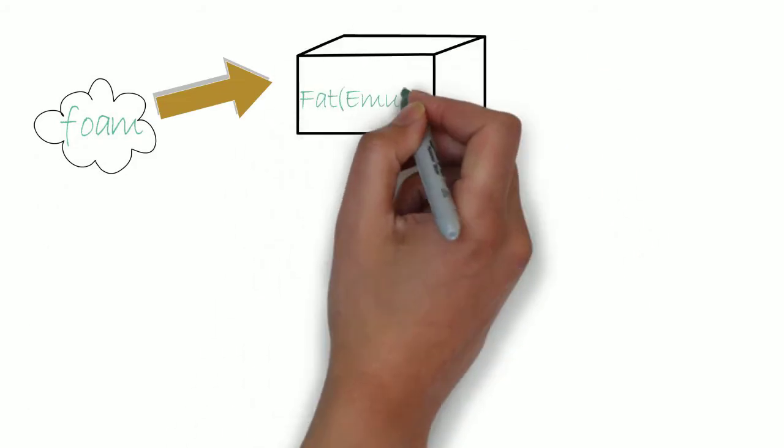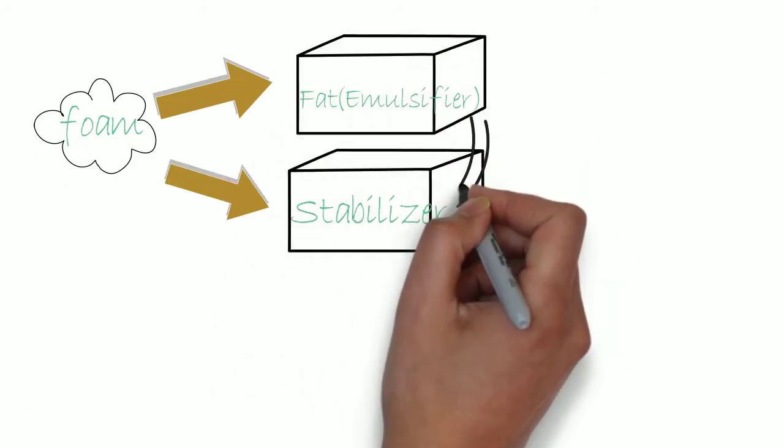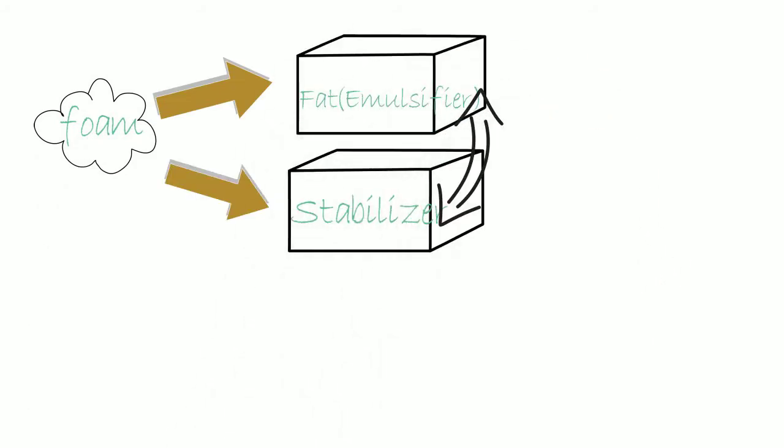In order to make a foam, you need fat and stabilizer. Without one or another, it will make for poor results. Foams can appear in different styles depending on the stabilizer used.